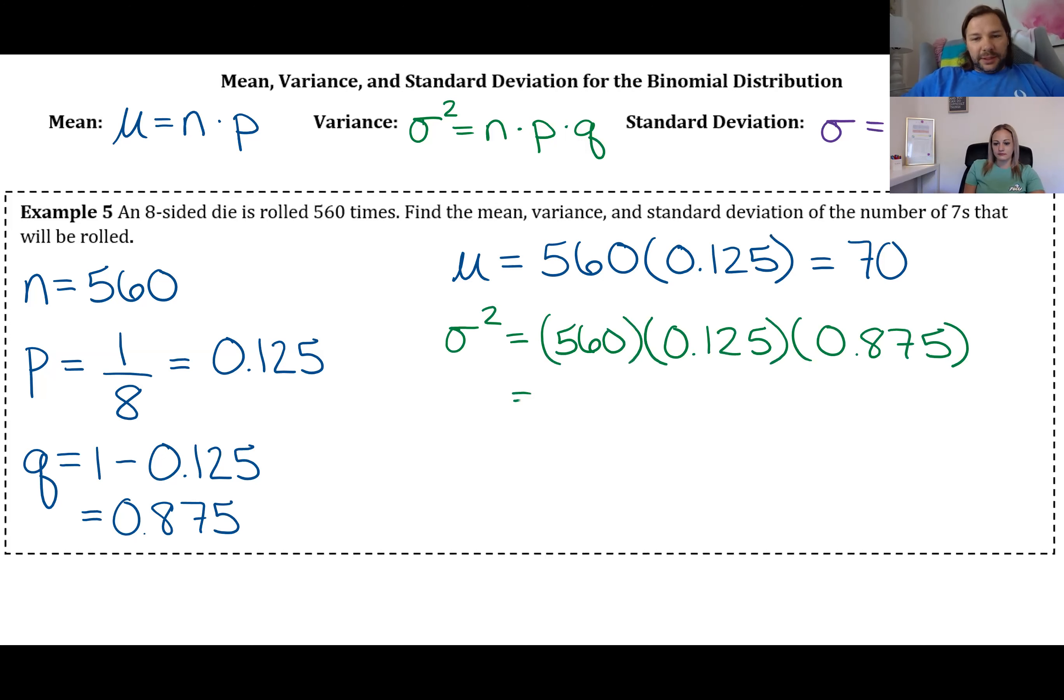The variance will be 560 times p times q, so that's 560 times 0.125 times 0.875. And so when you plug that into a calculator, it'll be 61.25.